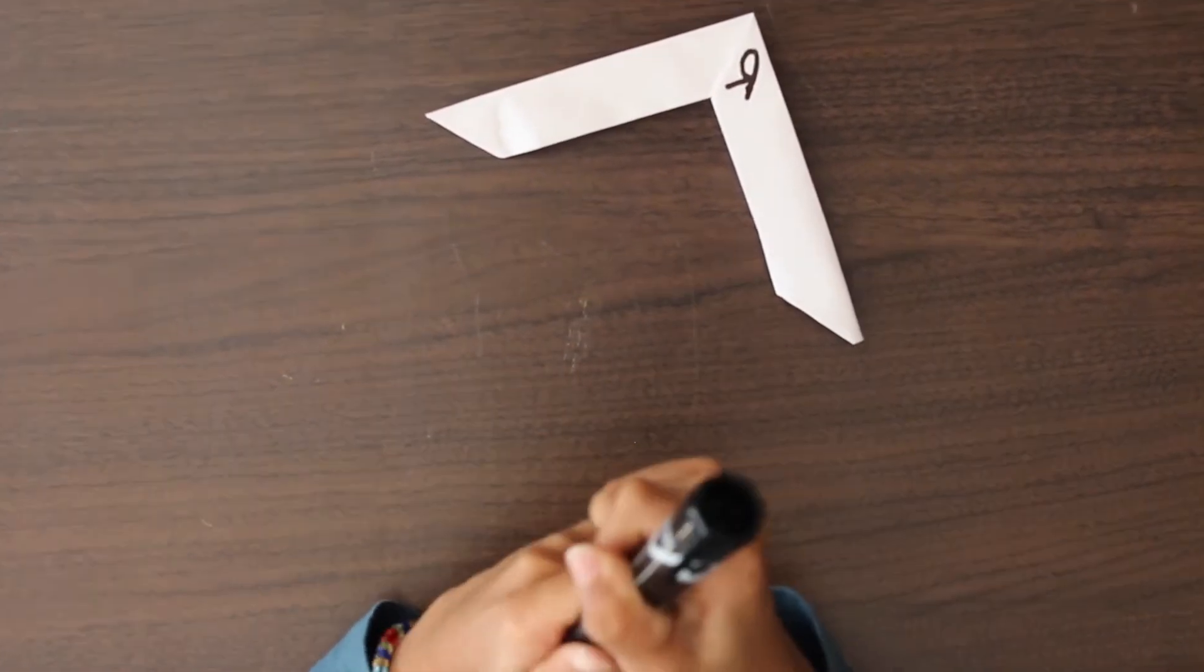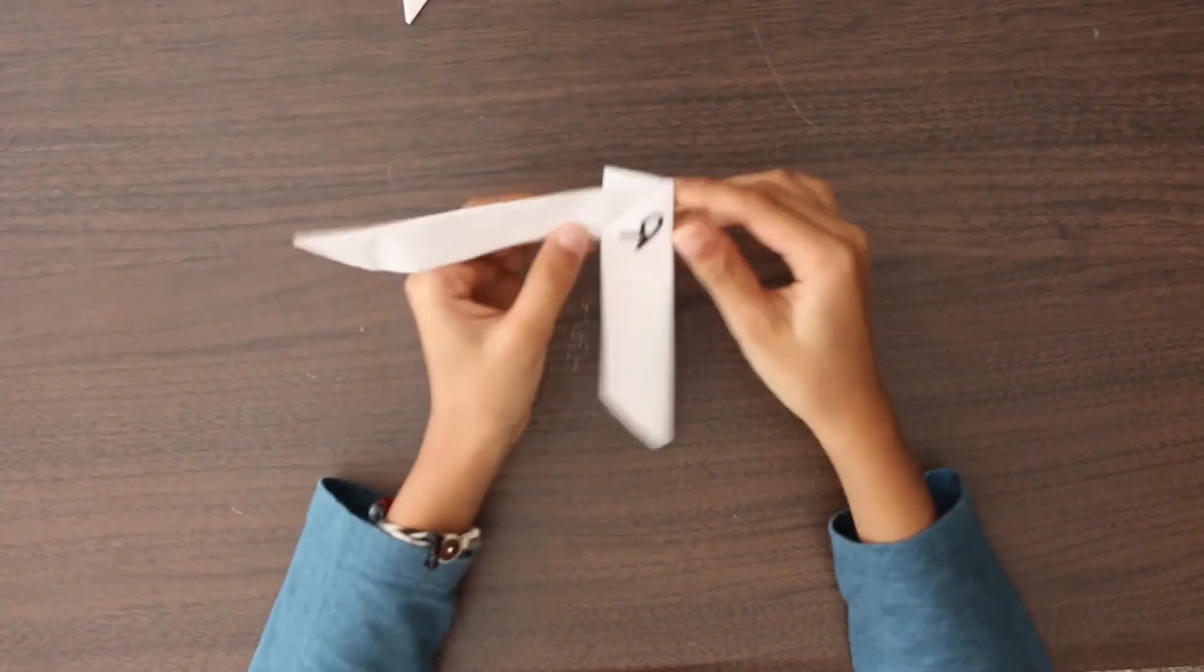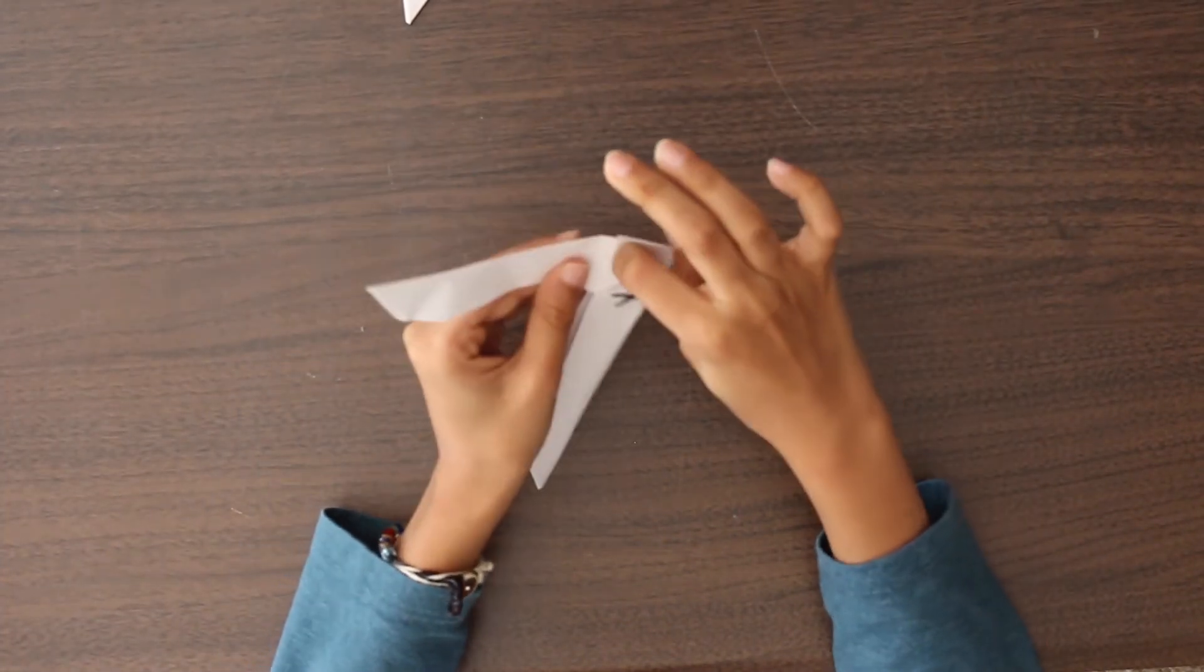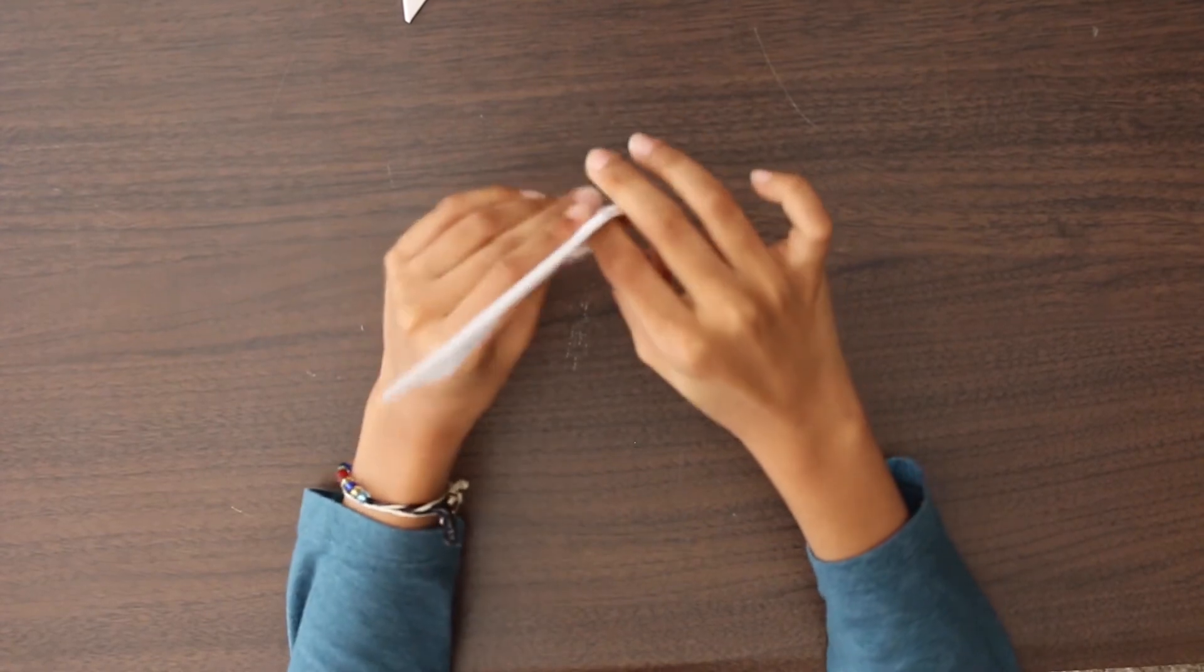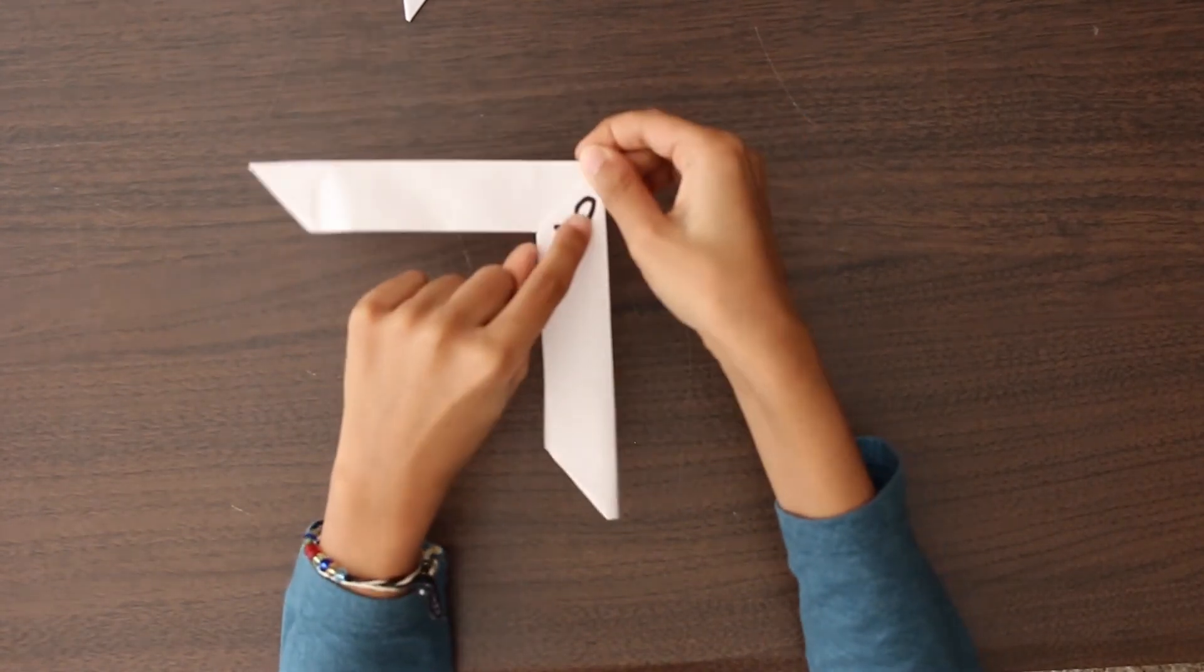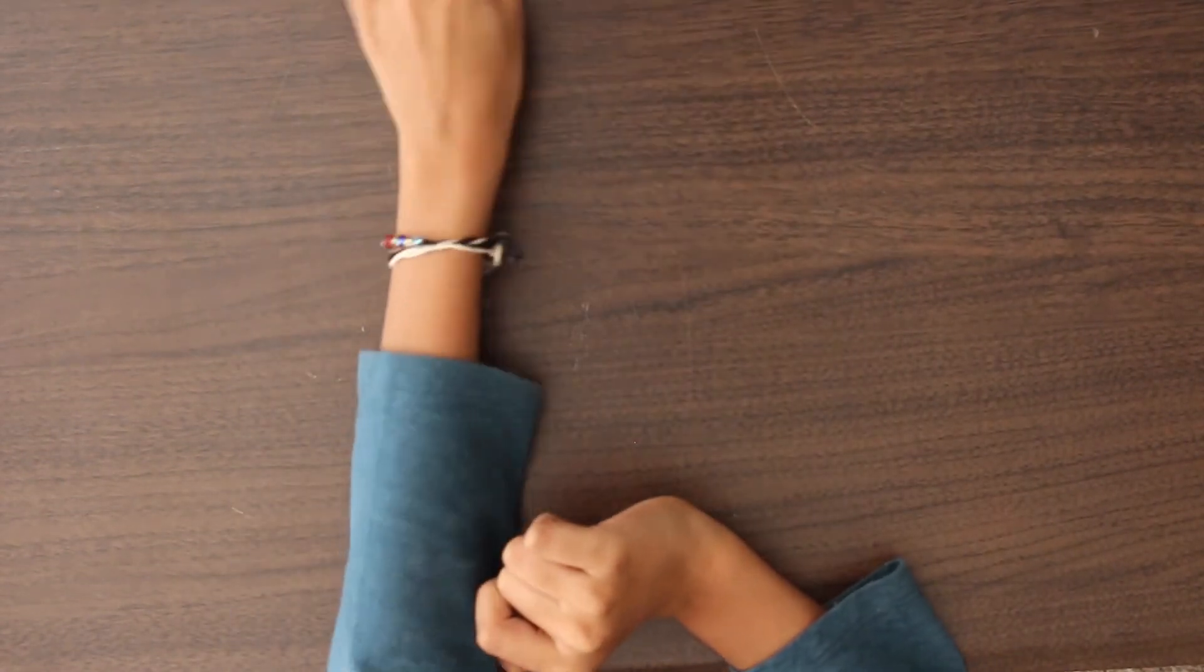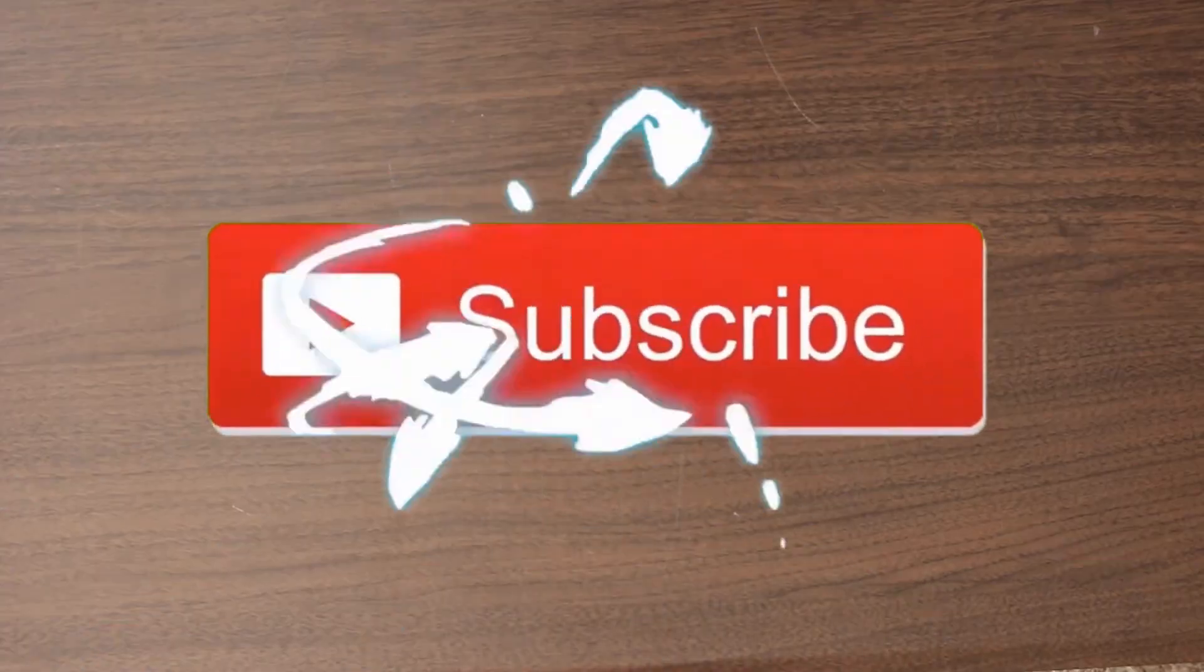If you're not candid, then stay tuned for my other video. This boomerang flies. When you fly it, make sure the ring is right there. And make sure it's the other side up. And then throw it with your right hand. Thanks for watching.